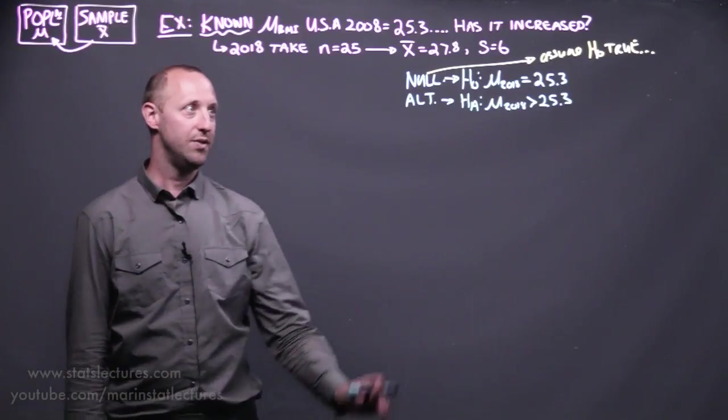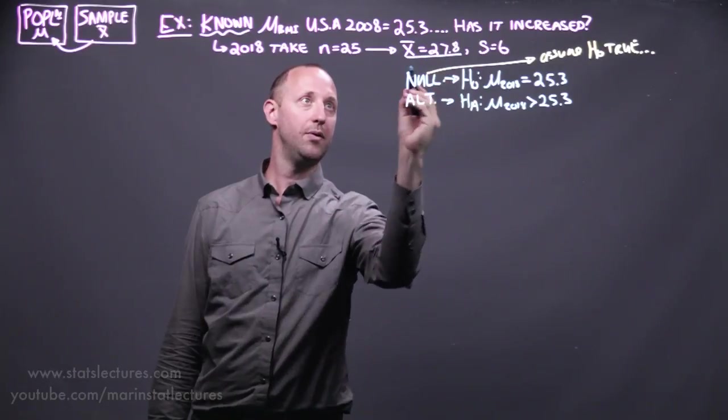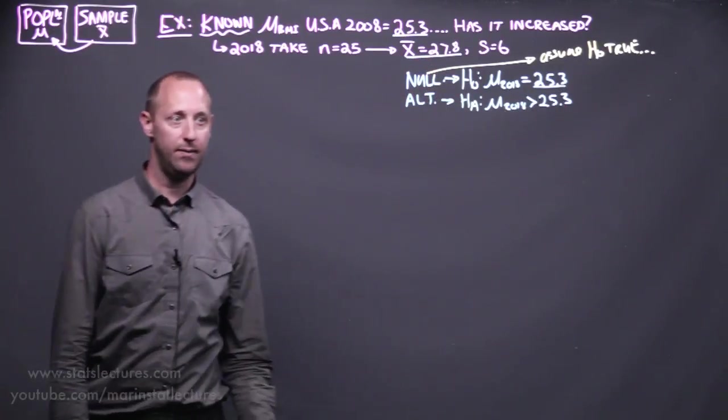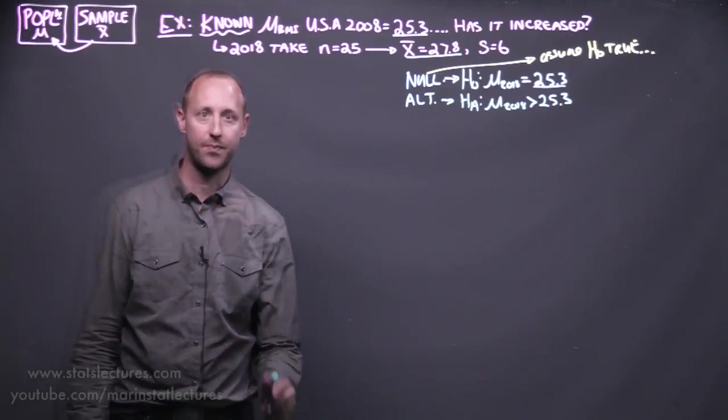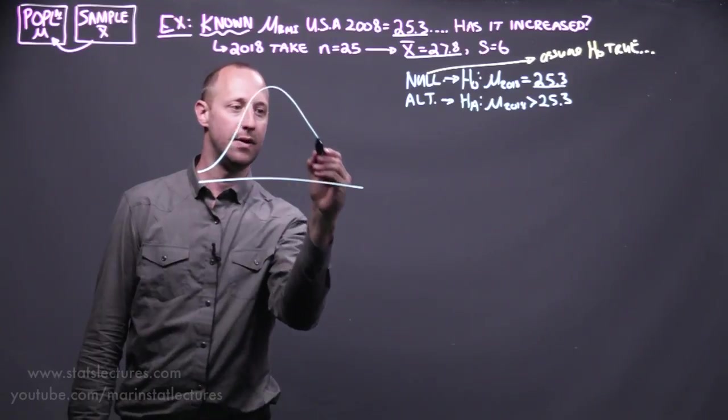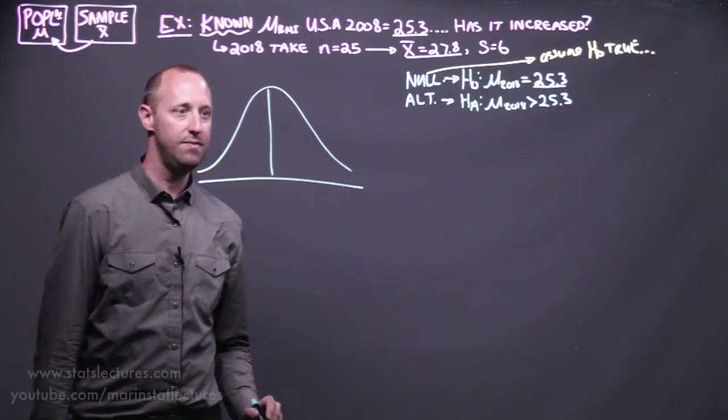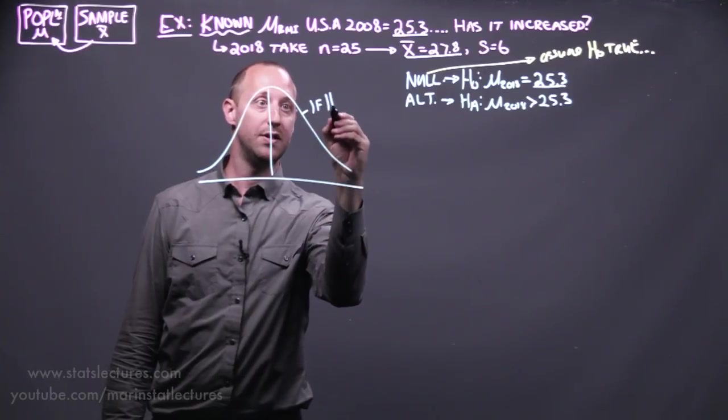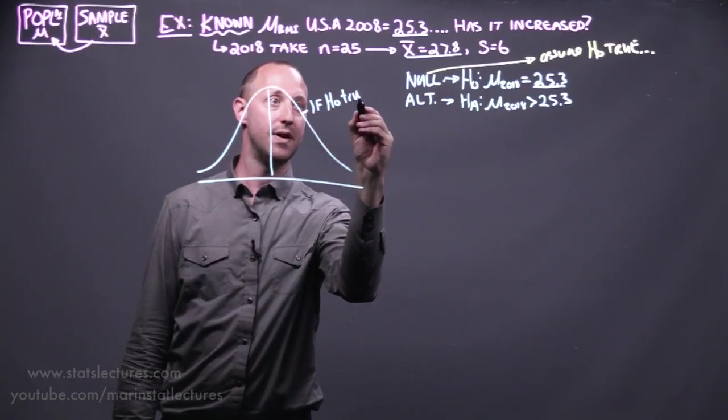In order to do this, we're going to want to compare what we got in our sample to what we hypothesize we should get, if our null hypothesis is true. So in order to do this, we can think about the sampling distribution under the assumption that the null is true.